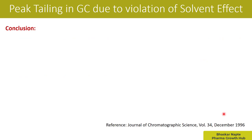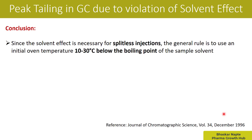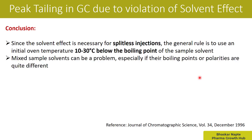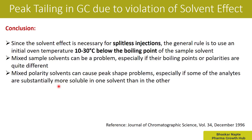Let us understand the final conclusions. Point one: since the solvent effect is necessary for splitless injections, the general rule is to use an initial oven temperature about 10 to 30 degrees Celsius below the boiling point of the sample solvent. The second important conclusion: mixed sample solvents can be a problem, especially if their boiling points or polarities are quite different — for example a mixture of water and DMA. Make sure the solvents are of similar polarities.